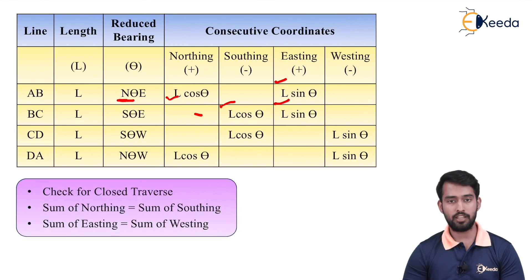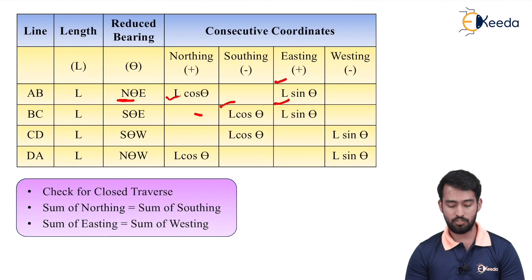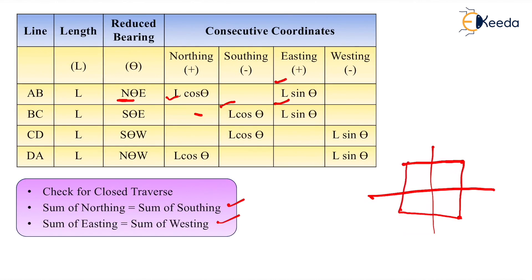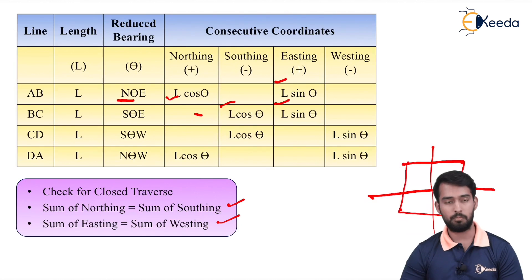Check for closed traverse: we have to check whether a traverse is correct. The check states that the sum of northing is equal to the sum of southing, and the sum of easting is equal to the sum of westing. So we draw a traverse — line AB is in north-east, BC is in south-east, CD is in south-west, and DA is in north-west. By knowing these lines, we plot a traverse accordingly using the north and east coordinates. Thank you.